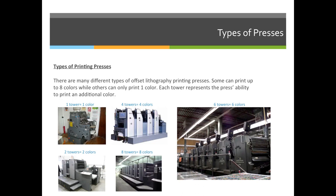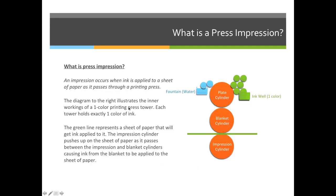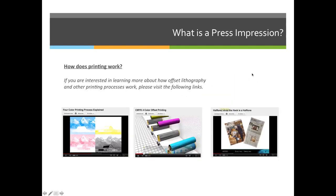Inside each tower — inside this column right here — you would see something that looks like this: a plate cylinder, a blanket cylinder, and an impression cylinder, and there's ink that's applied. What's important for this class is to know that only one color of ink can be applied per tower.